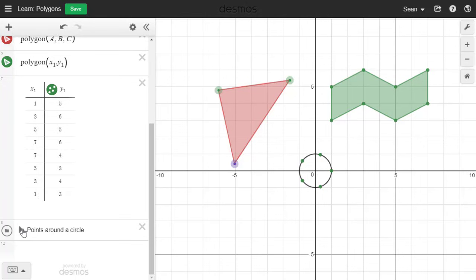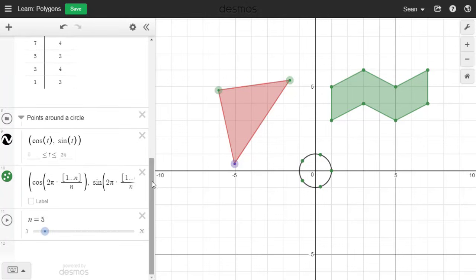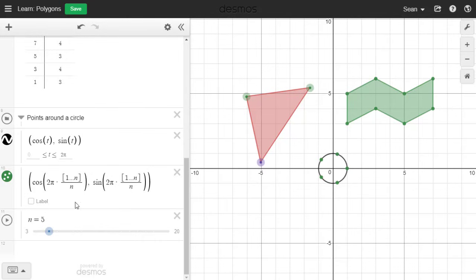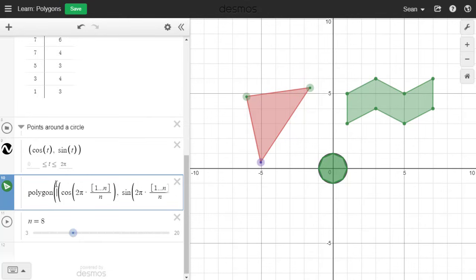Now let's have some fun. This parametric equation draws a circle. Using a list we can make n points along that circle. Now since this expression is a list of points all you'd have to do is write polygon in front of it.